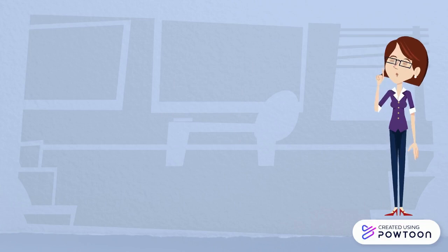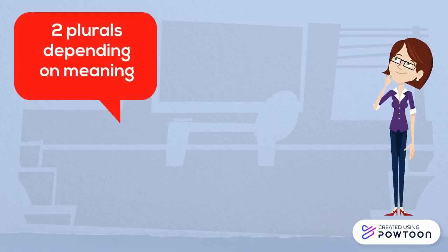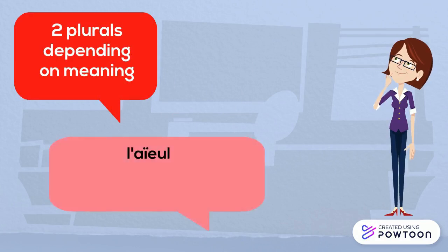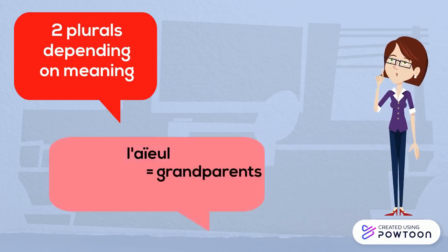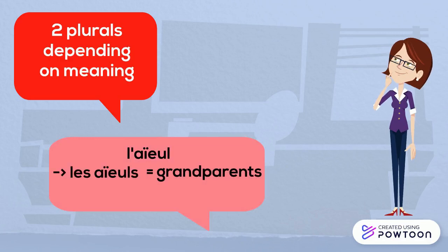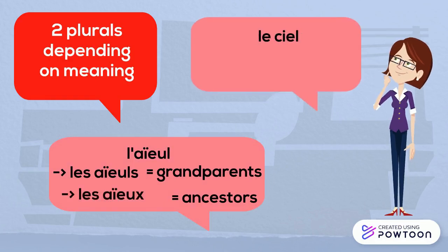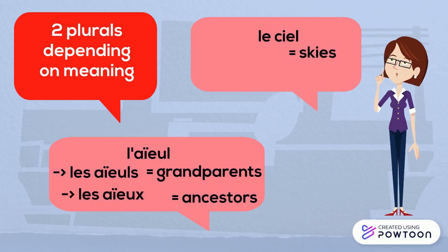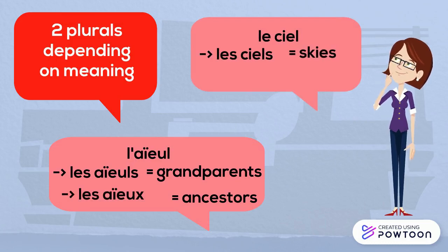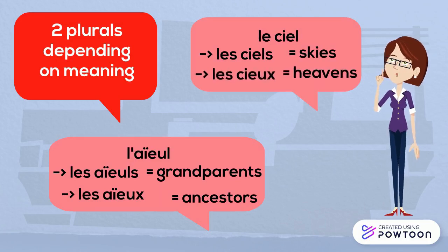Two words also have two different plurals depending on the meaning. First, 'aïeul': when it means grandparents, the plural is 'aïeuls'; when it means ancestors, the plural is 'aïeux'. Then 'ciel': when it means sky, the plural is 'ciels'; and when it means heaven, the plural is 'cieux'.